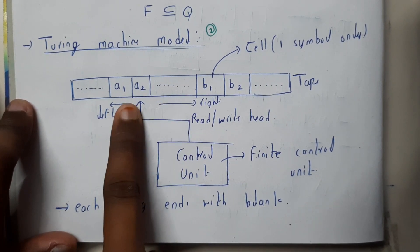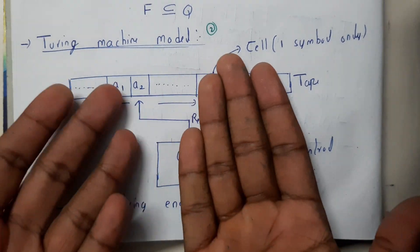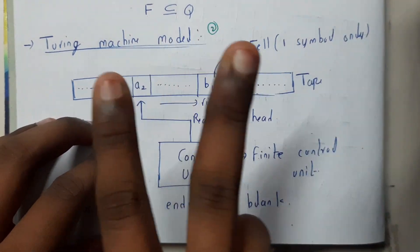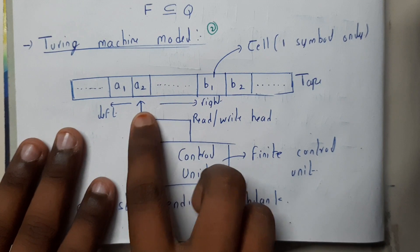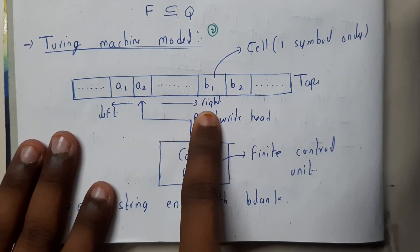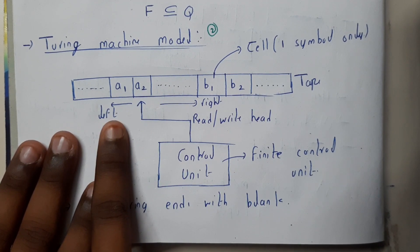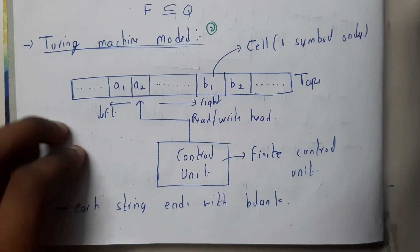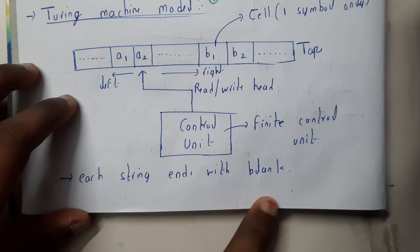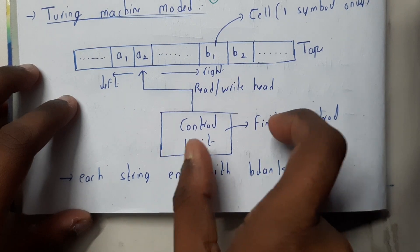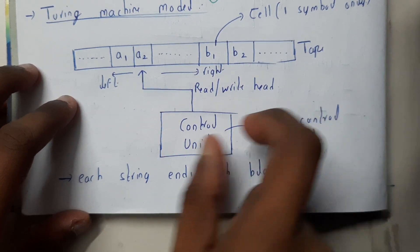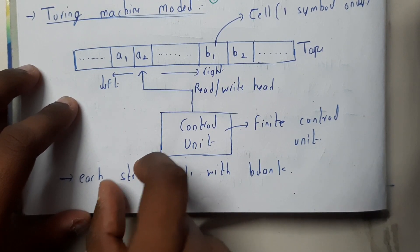The read-write head can read the data or write the data. It can do two operations and it can move from right to left or to the right in a particular direction. Each string ends with blank, so in between after one string there will be a blank and before that string there will be a blank, indicating that a new string is starting.